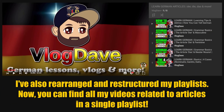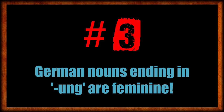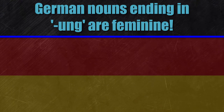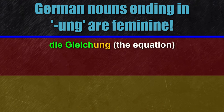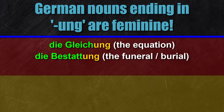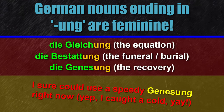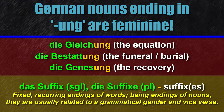So, talking about the article DIE as a singular article — this is an indicator for feminine nouns in singular, and this leads to rule number three. German nouns that end in the suffix -UNG are feminine nouns. Here are a few examples: DIE GLEICHUNG (the equation), DIE BESTATTUNG (the funeral or burial), DIE GENESUNG (the recovery). Many recurring and fixed endings of German words, called suffixes — 'das Suffix' (singular), 'die Suffixe' (plural) — are linked to one of the three respective grammatical genders.